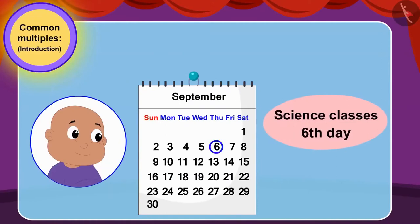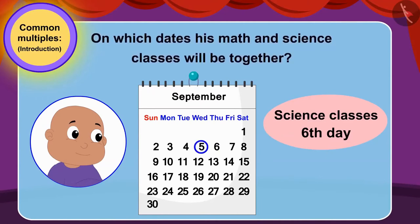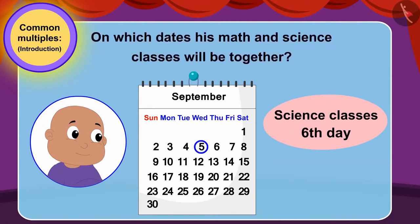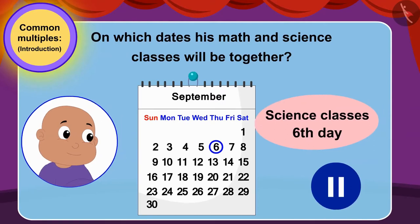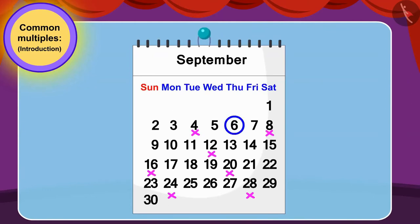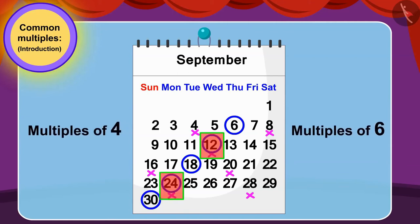Children, if Bablu's science class was every sixth day instead of every fifth, then can you tell on which dates his math and science classes will be together? You can stop the video and find the answer. Well done, children! Your answer is absolutely correct. We can find the answer by finding common multiples of four and six. We can see that the numbers 12 and 24 are common multiples of four and six. So, Bablu's math and science classes will be held on 12th and 24th simultaneously.